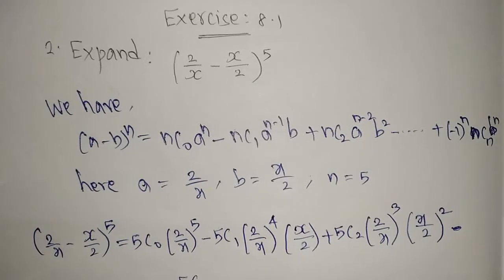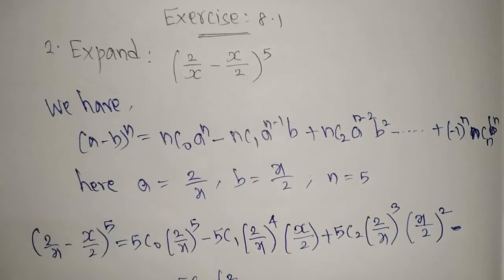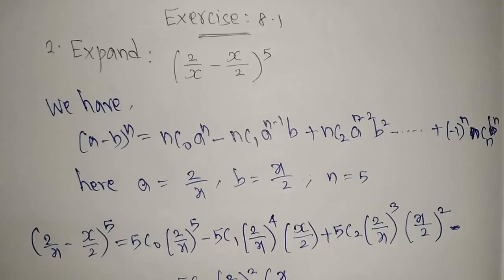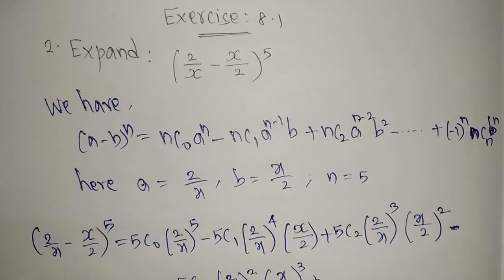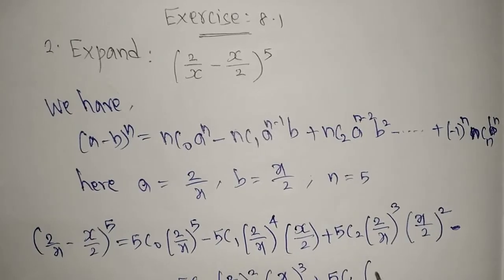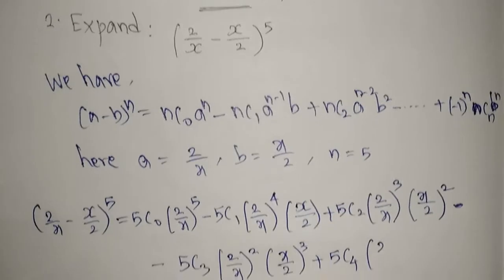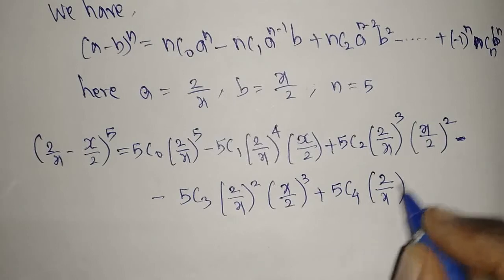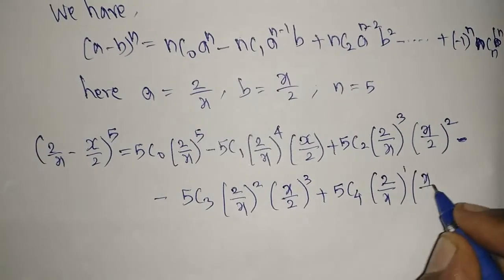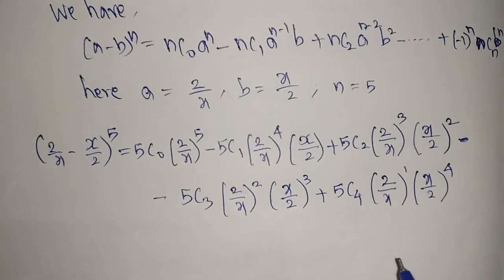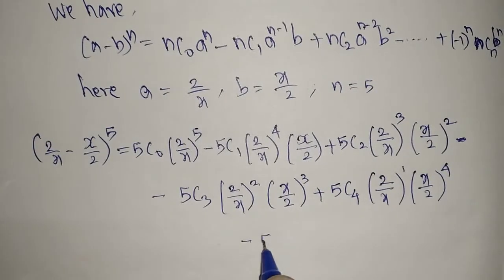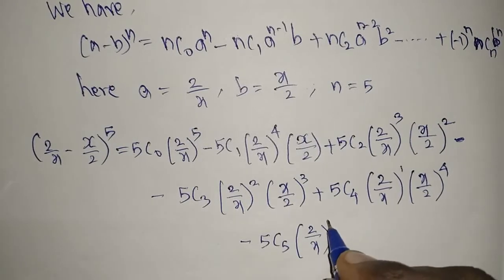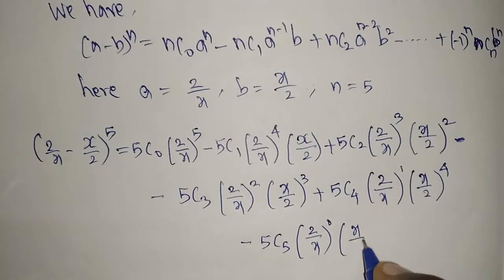Continuing: minus 5C3 * (2/x)^2 * (x/2)^3 + 5C4 * (2/x)^1 * (x/2)^4 - 5C5 * (2/x)^0 * (x/2)^5. Up to this you need to write.